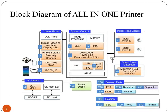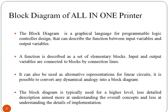Now look at the block diagram of the all-in-one printer. You can see different printer sections and corresponding components. The block diagram is a graphical language for programmable logic controller design that describes the function between input and output variables. A function is described as a set of elementary blocks, connected by connection lines. It can also be used as an alternative representation for linear circuits, and it is possible to convert any dynamical analogy into a block diagram. The block diagram is typically used for a higher-level, less detailed description aimed at understanding overall concepts.